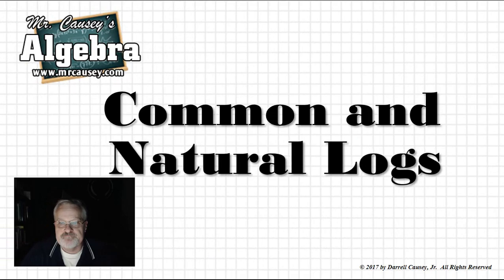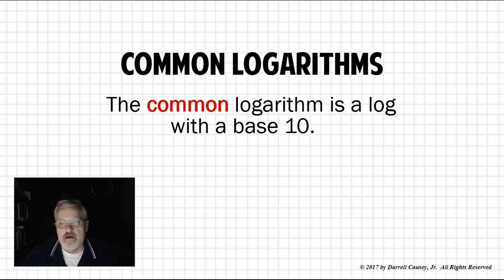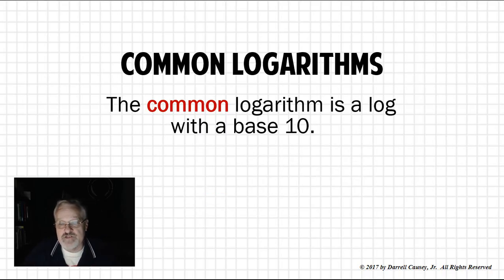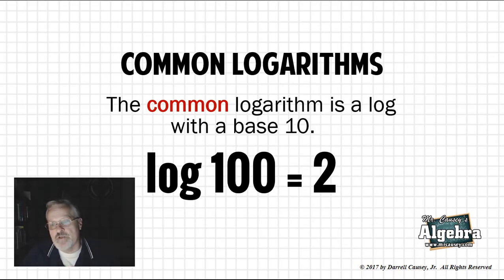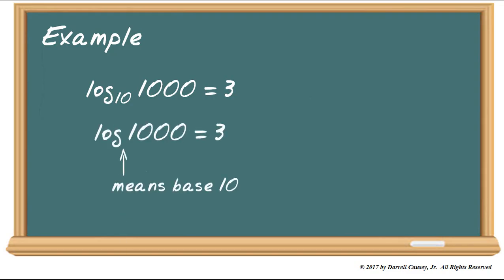Common and natural logs. Common logarithms: the common logarithm is a log with base 10. Base 10 logarithms are so common that we sometimes write log without the base. So log base 10 of 100 equals 2 — that's the same as 10 squared — and we can write it as log 100 equals 2. We're going to assume that when we don't write the base, that is base 10. That's called a common logarithm. For example, log base 10 of 1000 equals 3 can be written as log 1000 equals 3.